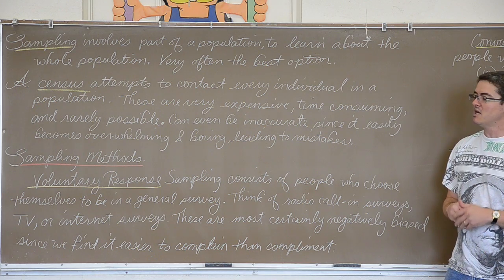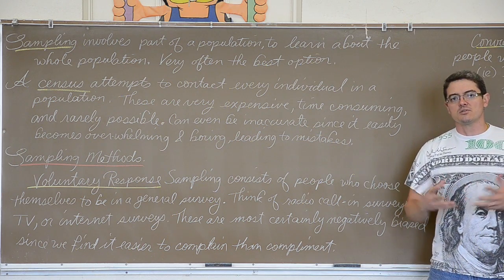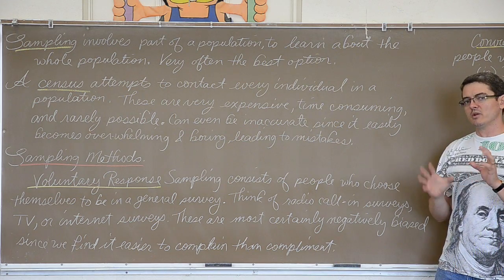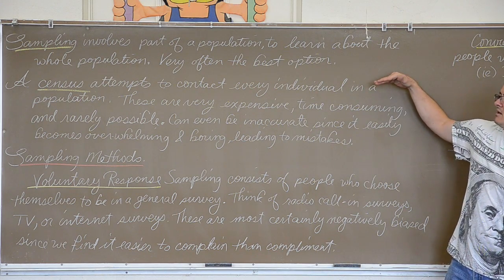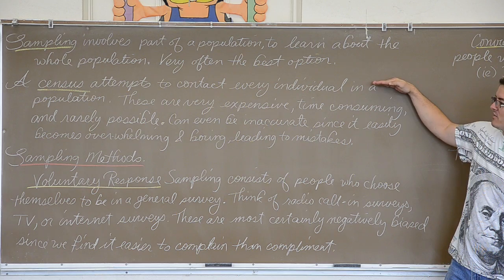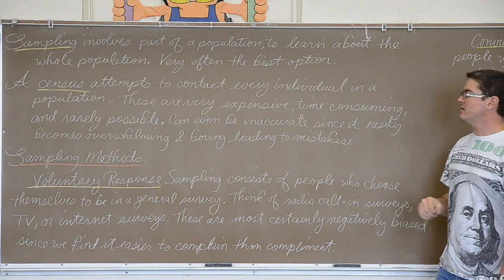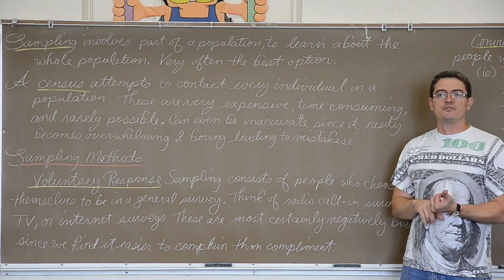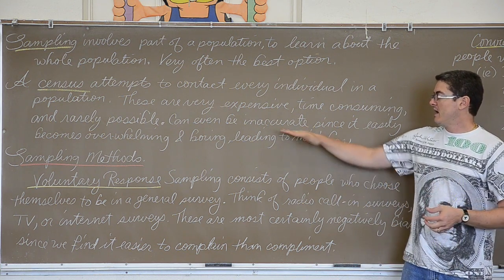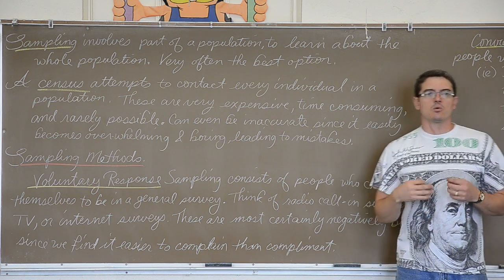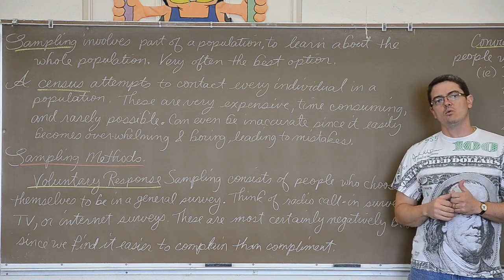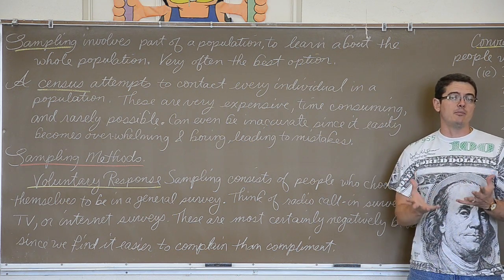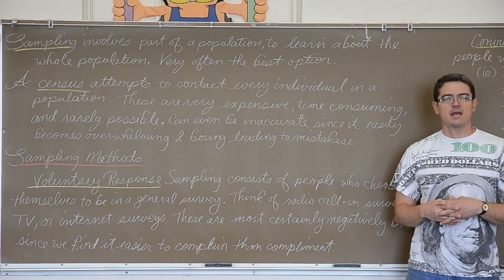Inference means using a sample's results to make a conclusion about the entire population — we're not doing that step yet, just collecting numbers. A census attempts to contact every individual in a population. Censuses are very expensive, very time consuming, and very often not possible. Also, if you are trying to work with every subject in an entire population, you will quickly be overwhelmed by a mass of data, which will actually probably lead to more errors than you would get from a sample.